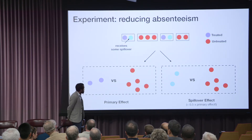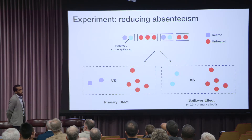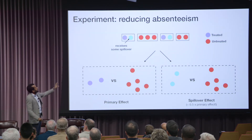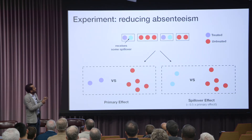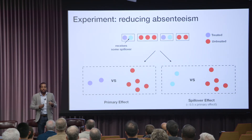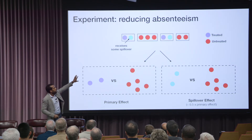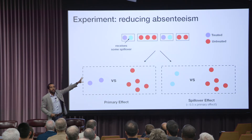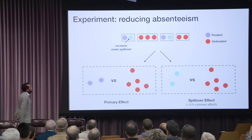That's still a somewhat simple case, because we assume that households don't interact with each other. If you send a mail to a parent about their child, this is not going to affect children in other families — so it's still well-contained.